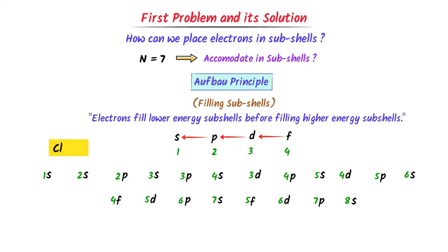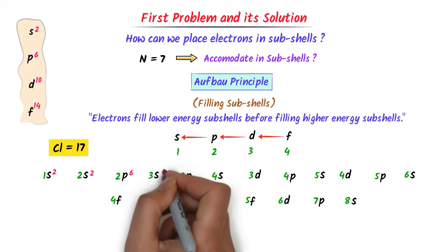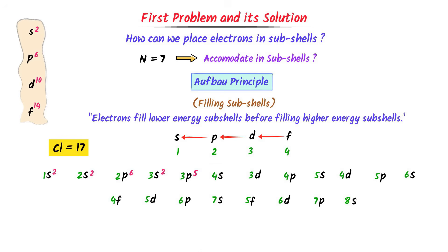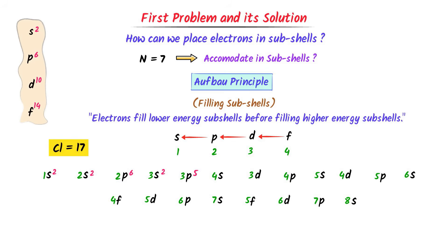Consider chlorine atom — its atomic number is 17. S can accommodate 2 electrons, P can accommodate 6, D can accommodate 10, and F can accommodate 14. In the case of chlorine: 2 electrons in 1s, 2 electrons in 2s, 6 electrons in 2p, 2 electrons in 3s, and 5 electrons in 3p. This is the complete electronic configuration of chlorine in subshells. The Aufbau principle teaches us about filling subshells with electrons using this easy trick.